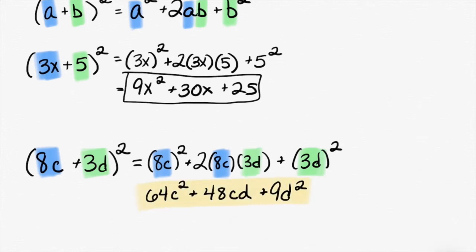9d squared, good. There's nothing wrong with doing this the old way with the distributive property. No one will throw garbage at you if you choose to solve it that way. Sometimes it's a little faster. Sometimes it takes exactly the same amount of time.